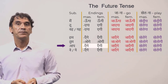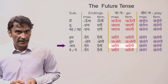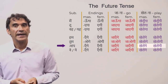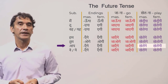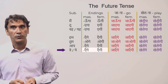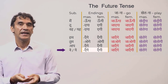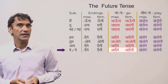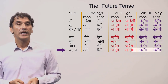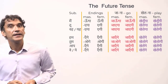For 'aap', the endings are 'enge' for both genders. 'Aap jaenge' and 'aap jaengi' mean 'you will go.' 'Aap khelenge' and 'aap khelengi' mean 'you will play.' For the third person plural 'ye/we', the endings are also 'enge/engi.' 'Ye jaenge' and 'ye jaengi' mean 'they will go.' 'Ye khelenge' and 'ye khelengi' mean 'they will play.'